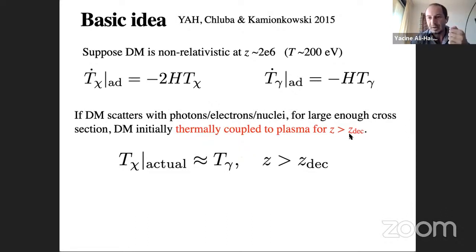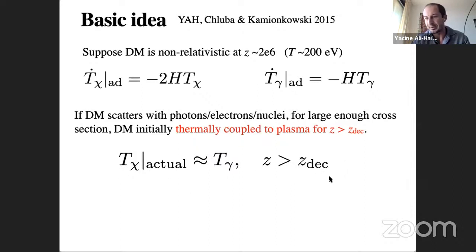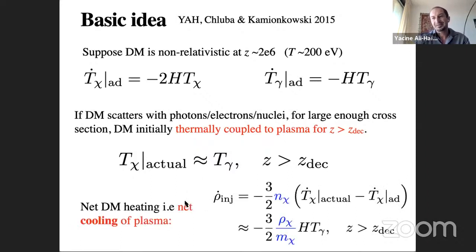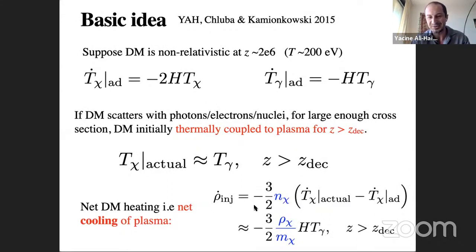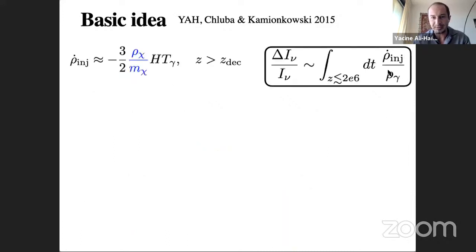The actual dark matter temperature closely tracks the plasma temperature down to a decoupling redshift. The photon-baryon plasma is constantly heating up dark matter, which takes heat away from it. The net energy injection rate is (3/2) × n_χ × (T_χ_actual − T_χ_adiabatic). This is inversely proportional to dark matter mass if the particle makes up all the dark matter.